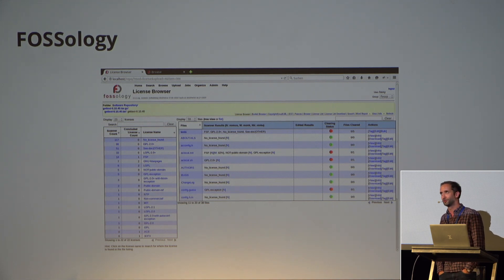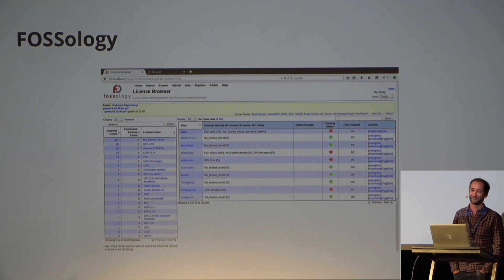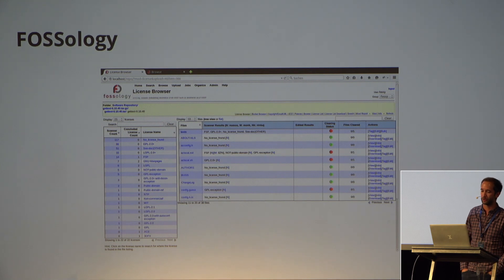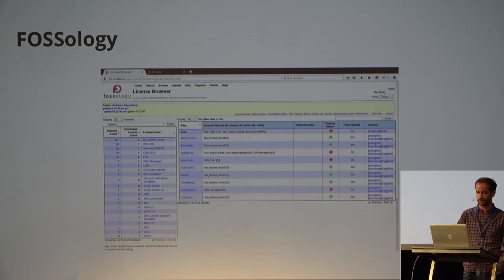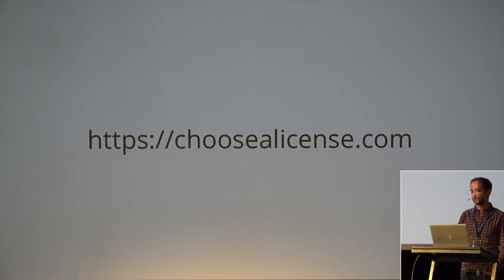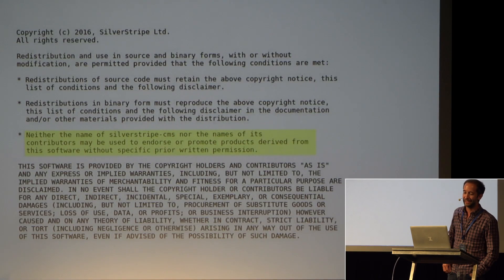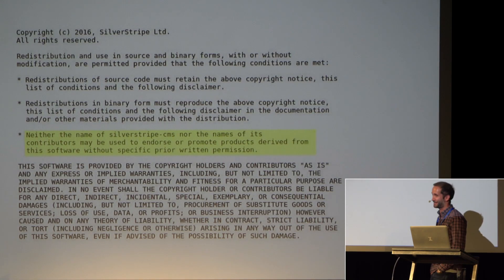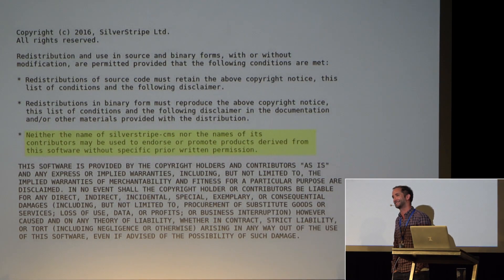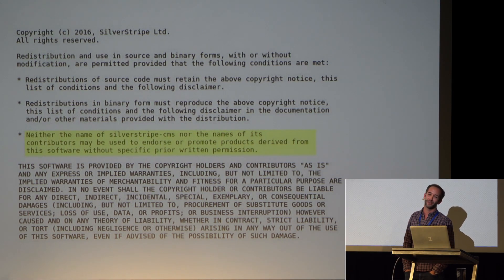Some more resources about licenses: there's a tool called FOSSA — it's a license browser, you can put it in a Docker container or Vagrant box and try it out, really a good one if you care about this kind of stuff. There's also a cool project initiated by GitHub called 'Choose a License' that helps you pick the right license for your project.